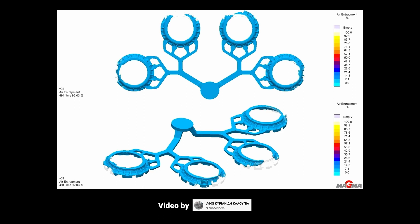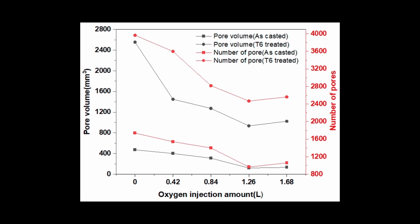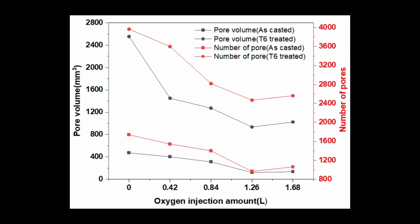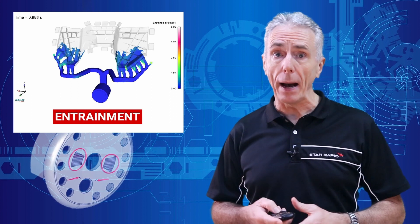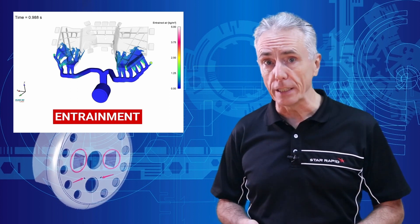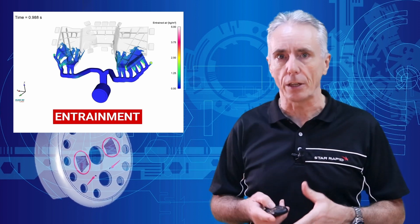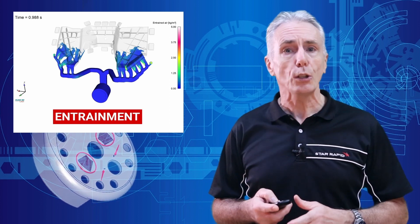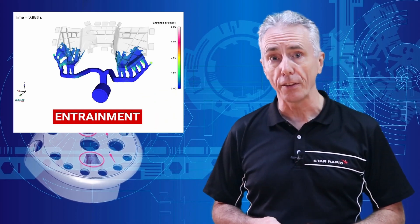How else can you get rid of entrained air? In the past people experimented by filling the die with oxygen, so all of the entrained gases would be oxygen. That would react violently with the molten aluminium and form all sorts of oxides and other compounds, thereby turning the gases into solids. This would leave a vacuum which then collapses, pulling the molten aluminium in on itself. It did work, but as you can imagine, it's extremely dangerous. And that's why very few companies still offer that.